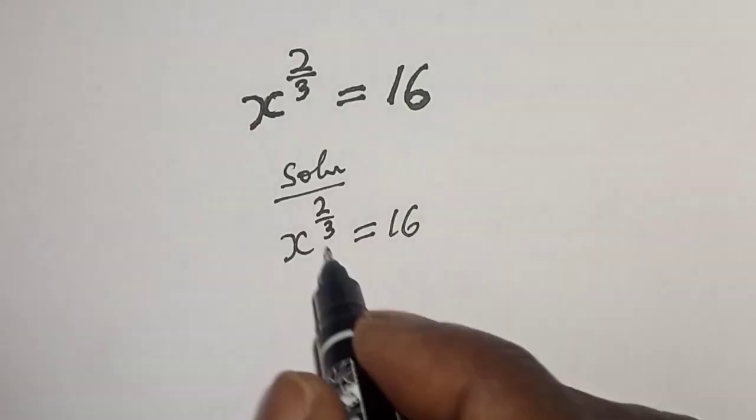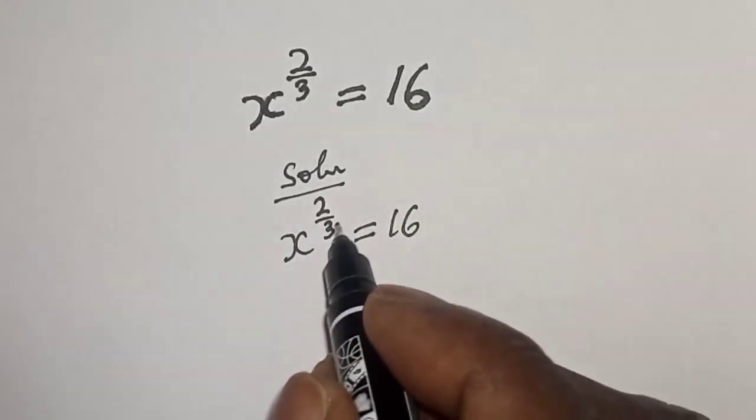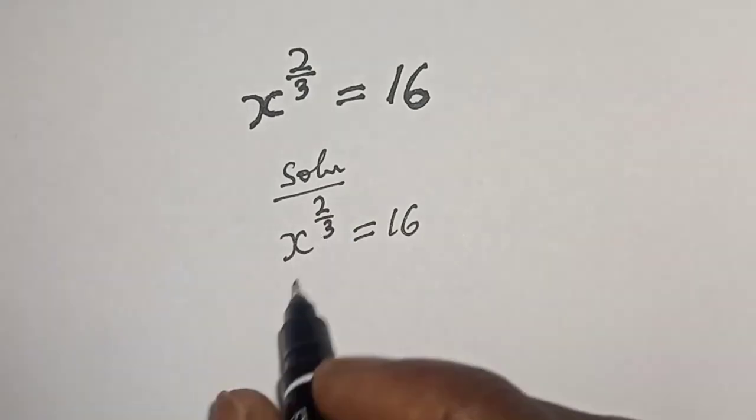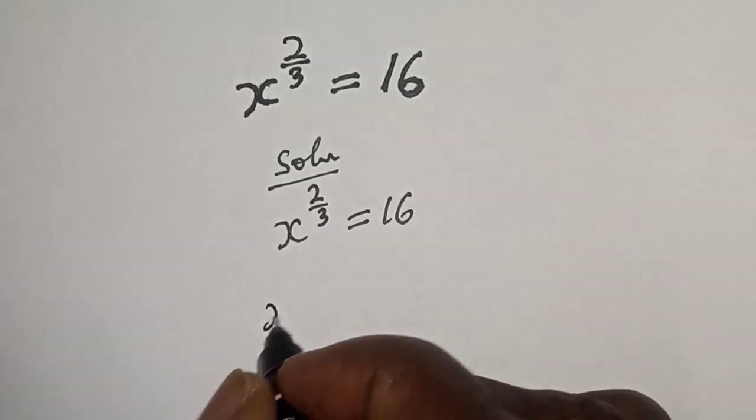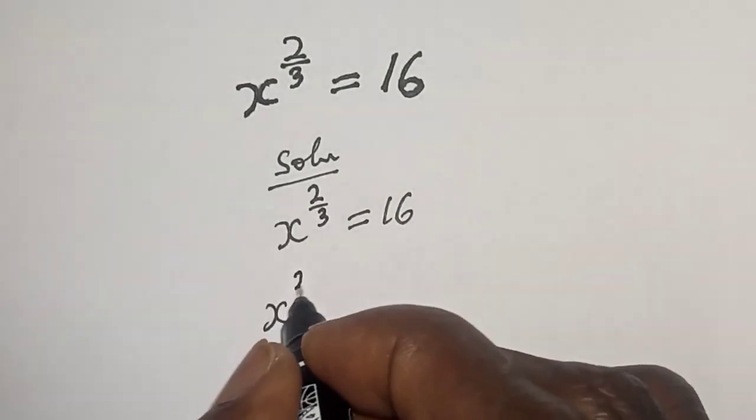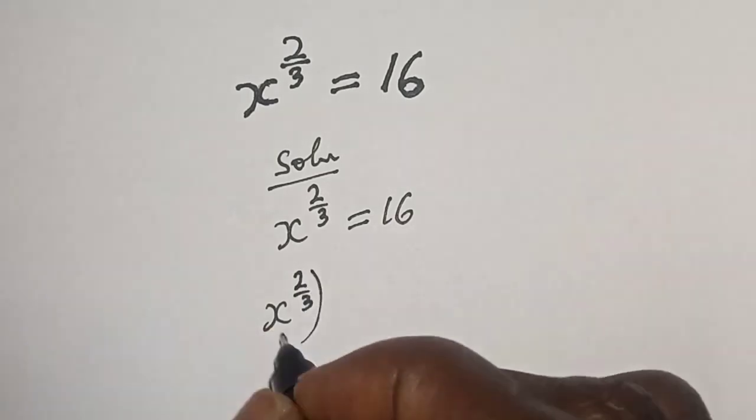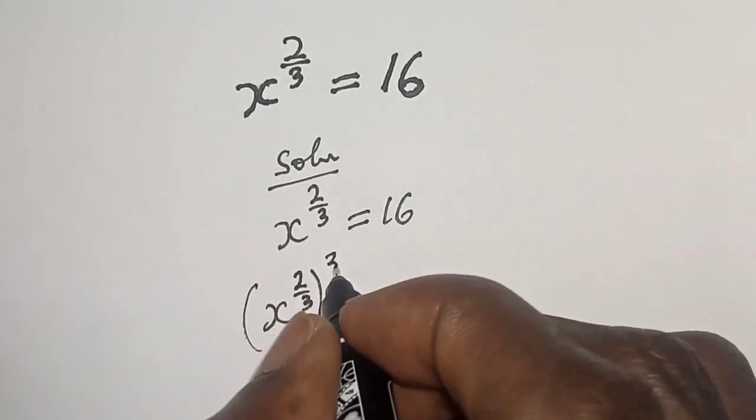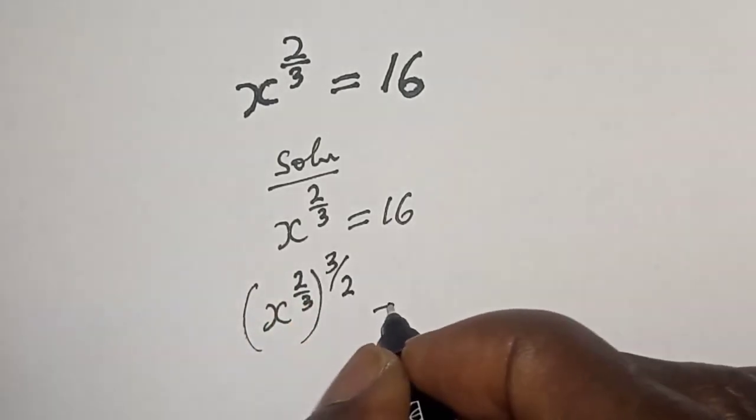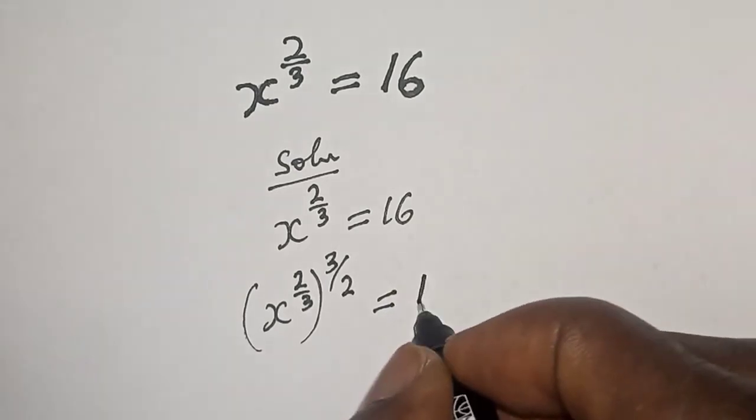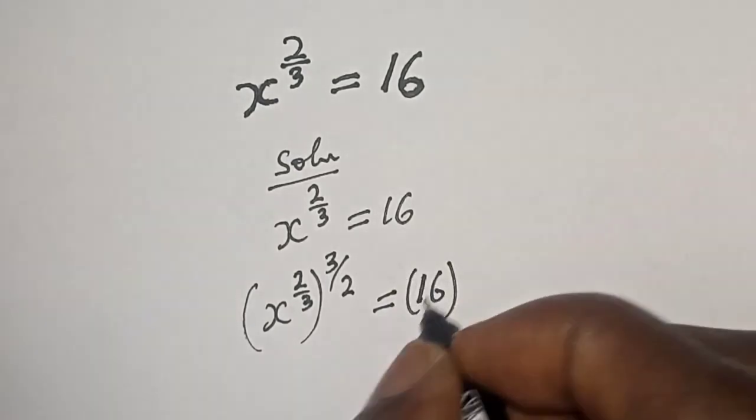Let us multiply the exponent of both sides by 3/2. x raised to power 2/3 to the power of 3/2 is equal to 16 raised to power 3/2.